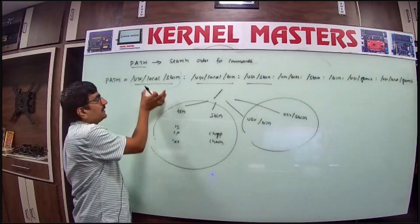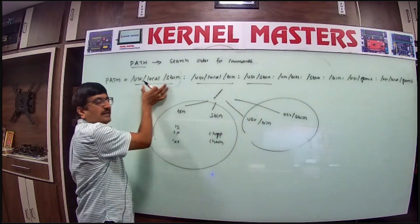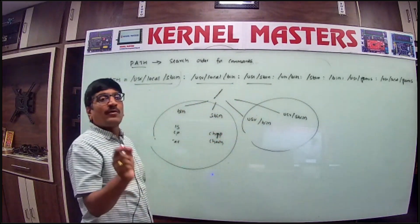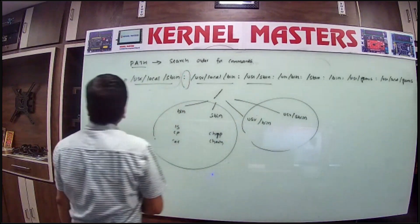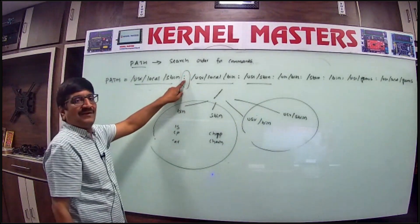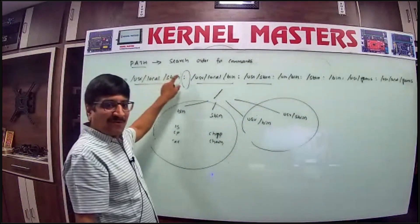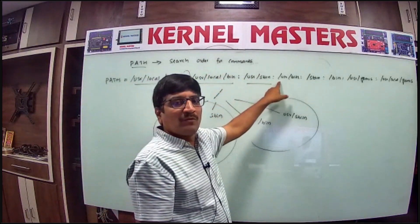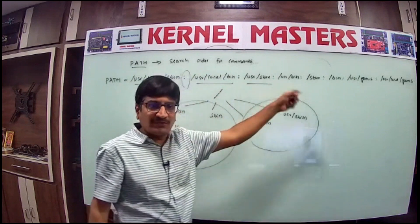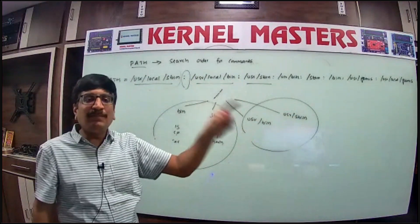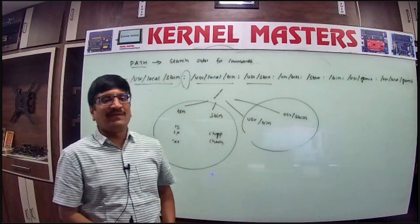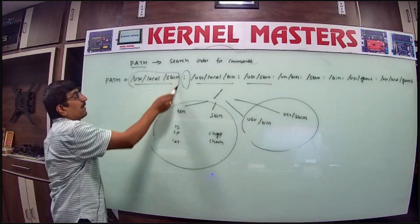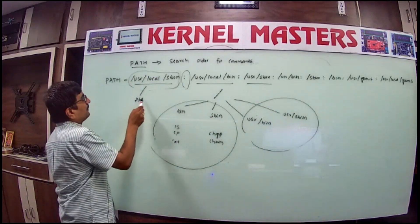Each path location in the PATH variable is separated by a colon. First path, colon, second path, colon, third path — that is the format. You can have n number of locations in your system, each separated by a colon. Every path mentioned must be an absolute path.